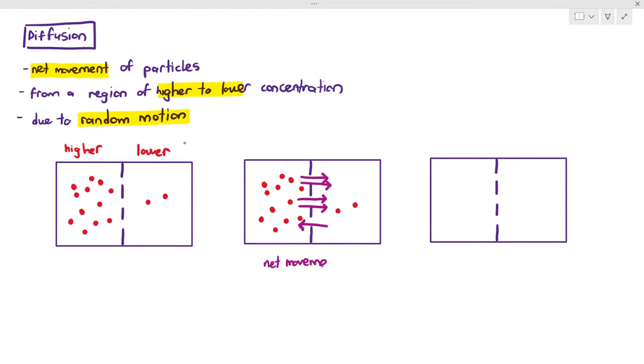This is referred to as a net movement from left to right, because more are moving from left to right compared to the other way around.